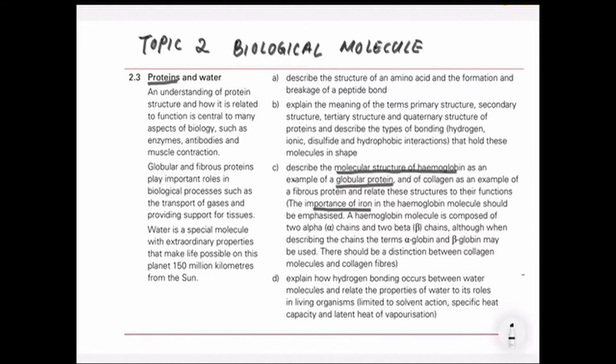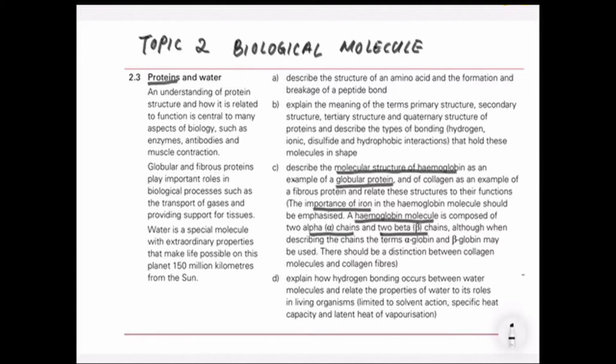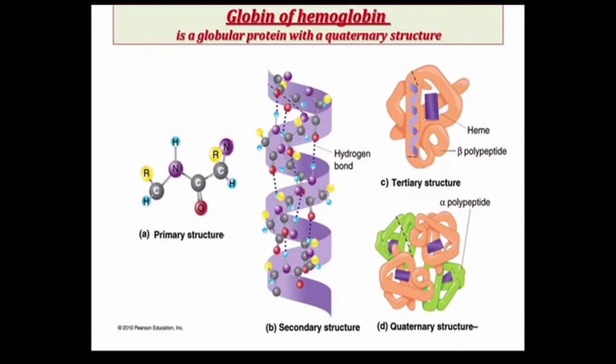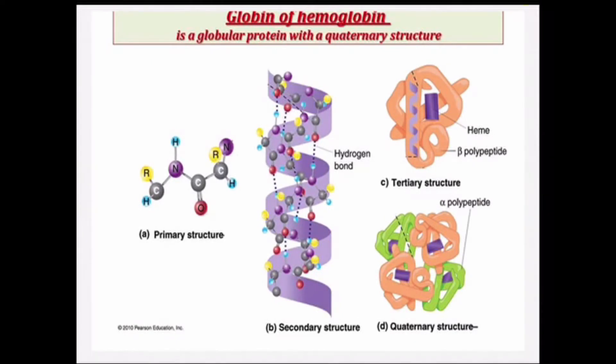I will relate to the structure of hemoglobin, which emphasizes on its quaternary structure, made out of alpha chain and beta chain, where we need to identify from the diagram itself. Now let's look at the structure of hemoglobin. Just a recap, let's revise on the structure of a protein.